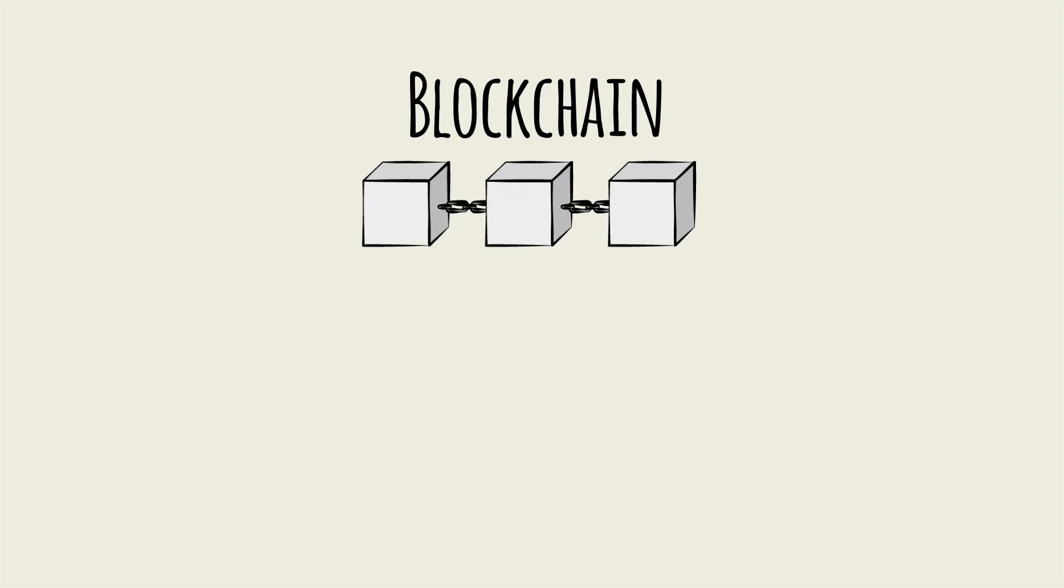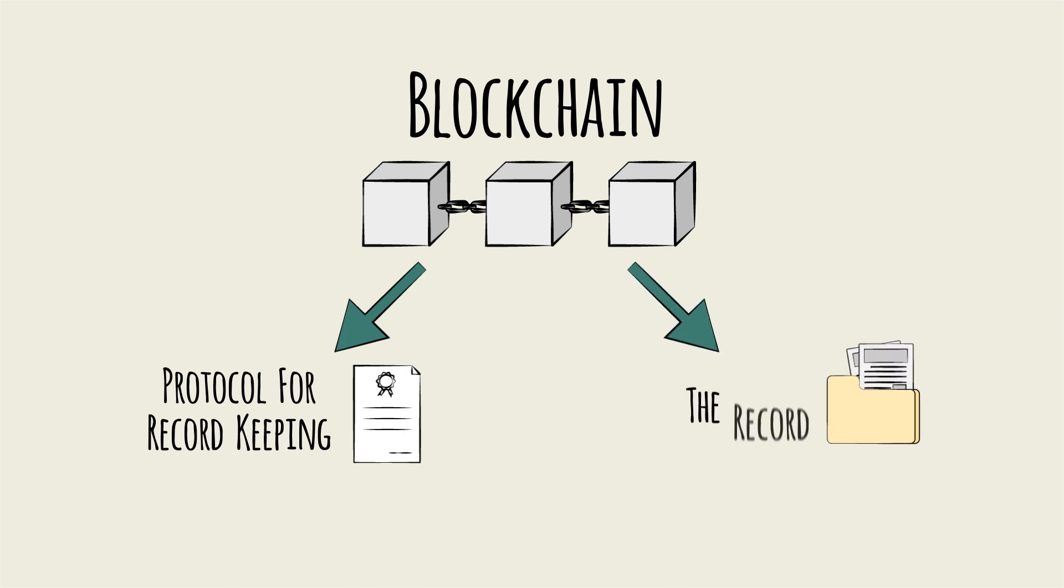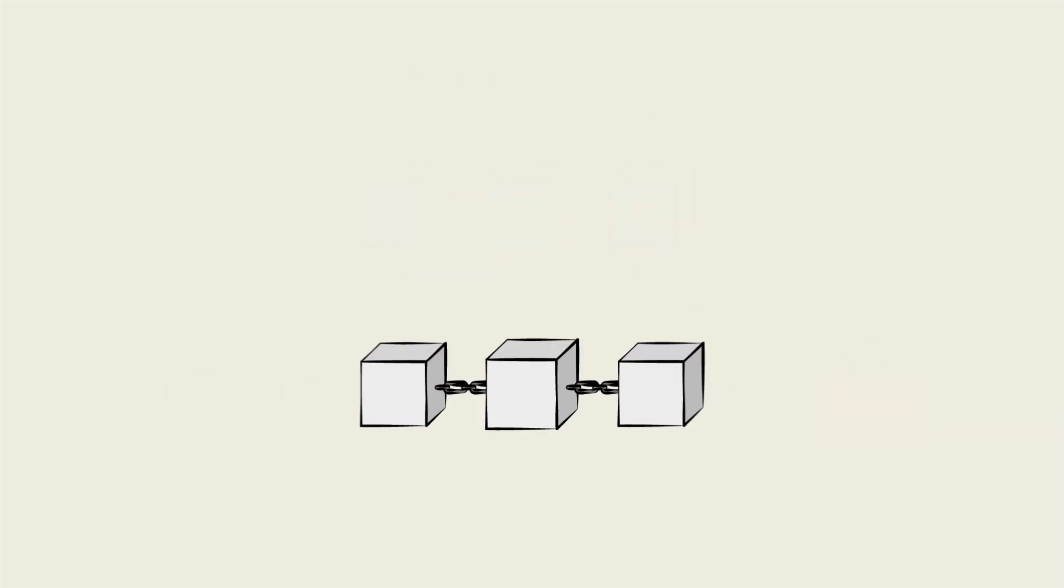The word blockchain is used to describe both the protocol for record keeping, meaning the way of storing records, and the record itself. Each individual blockchain operates under a version of blockchain protocol. Let's look at how, in practice, these blockchains create trust without any central authority.